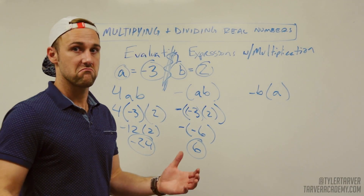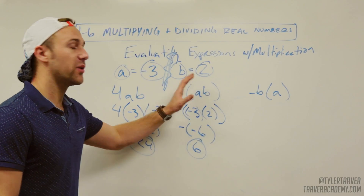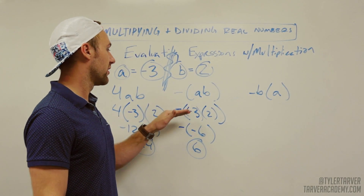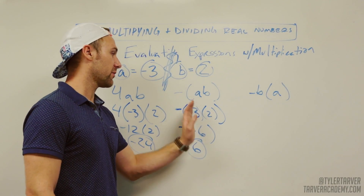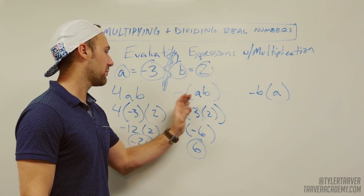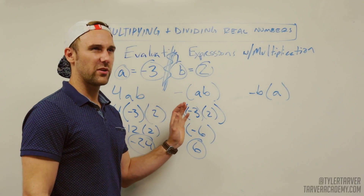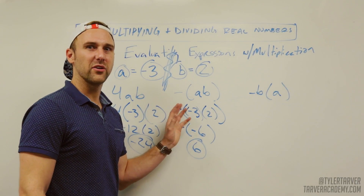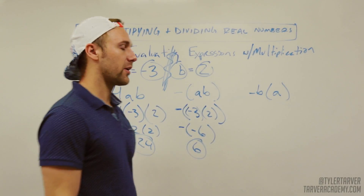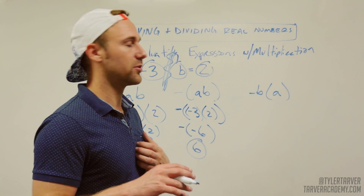If you want to put that in your calculator, make sure you put all the parentheses you need. So you need to put the minus sign, then parentheses, then negative 3, then times 2, close parentheses. Your calculator will handle it, but make sure you get all those parentheses, because if you don't, it's going to mix up the signs.